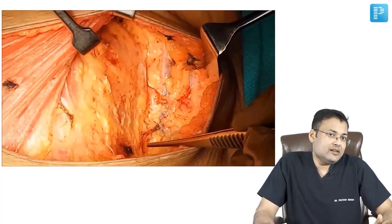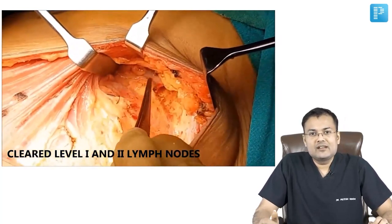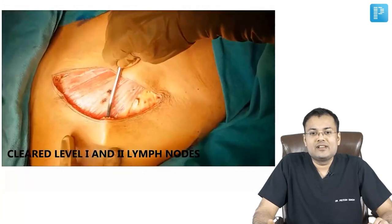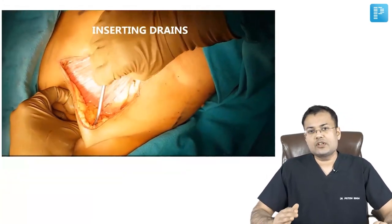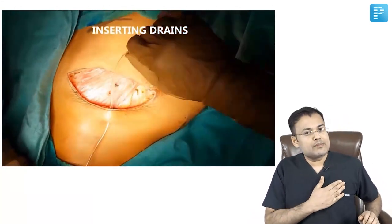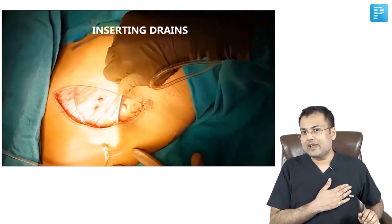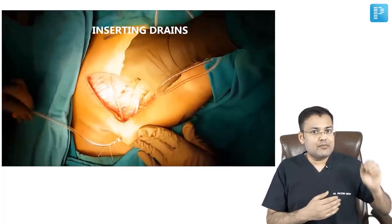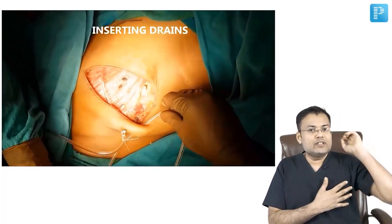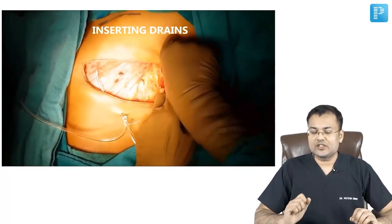Level 1 has been cleared. Level 2 lymph nodes — the central group — were located behind the pectoralis minor muscle. Now we are inserting the closed suction drain, which has two limbs. One limb is placed beneath the skin flap and the second limb is placed into the axilla, so that secretions will be squeezed out by the drain.